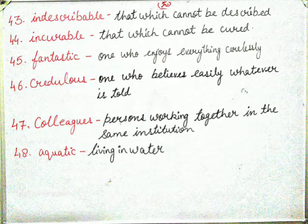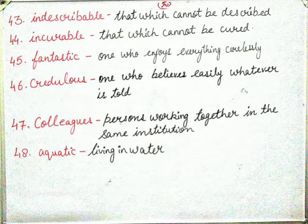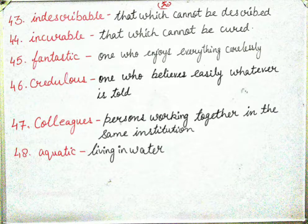Next is 'credulous' — one who believes easily whatever is told. Jisi ko koi kuch kaha jaye to easily jo maan jaye use credulous kehte hain. Next is 'colleagues' — persons working together in the same institution. Koi aapke saath mein kaam karne wala person use colleague kehte hain.